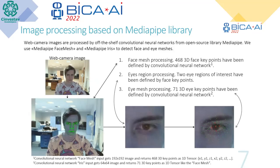The first stage is face mesh processing: 468 3D face keypoints are defined by the convolutional neural network MediaPipe Face Mesh. The second stage is eye region processing: two eye regions of interest are defined by face keypoints. Then 71 3D keypoints are defined by the convolutional neural network MediaPipe Iris.